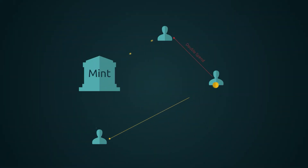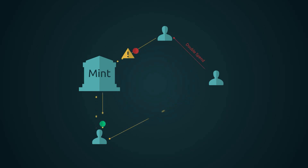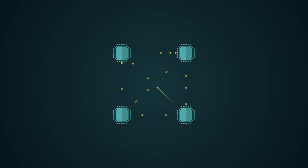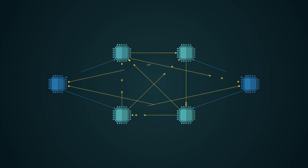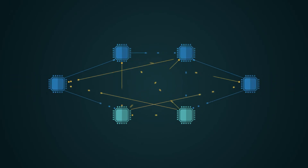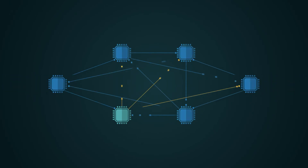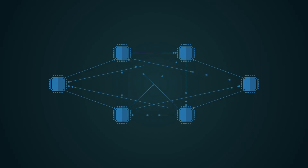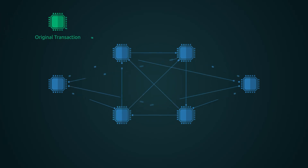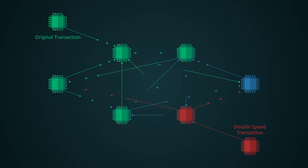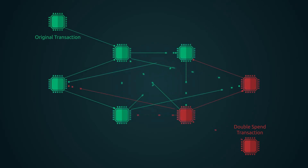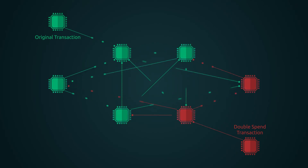In the mint-based model the mint was aware of all transactions and decided which arrived first. To accomplish this without a trusted party, transactions must be publicly announced and we need a system for participants to agree on a single history of the order in which they were received. The payee needs proof that at the time of each transaction the majority of nodes agreed it was the first received.